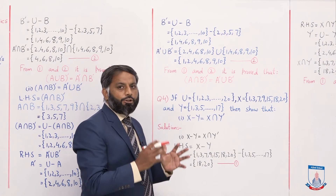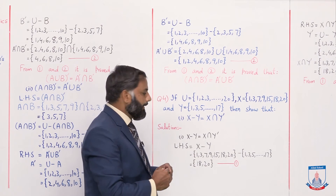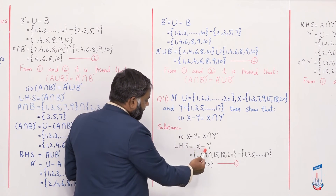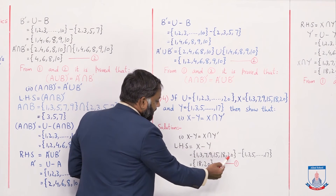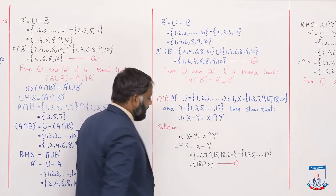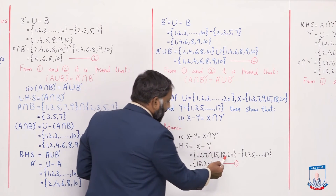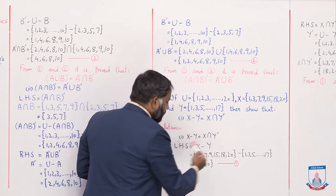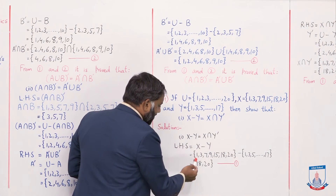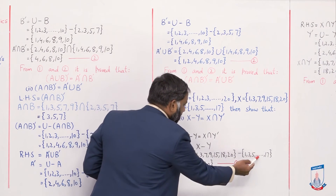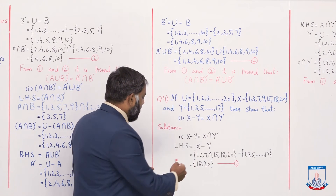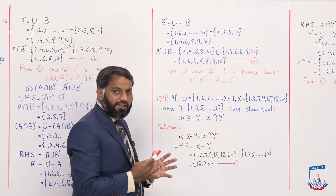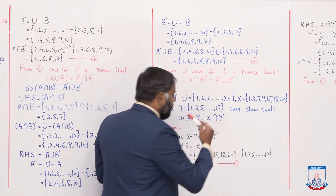Here also there are two sides. First we solve the left hand side: X minus Y. We write set X minus set Y. The elements of set X that are not in set Y — since the first five elements are all odd and those odd elements are present in Y — only {18, 20} remain. So X minus Y = {18, 20}. Left hand side solved, called equation 1.